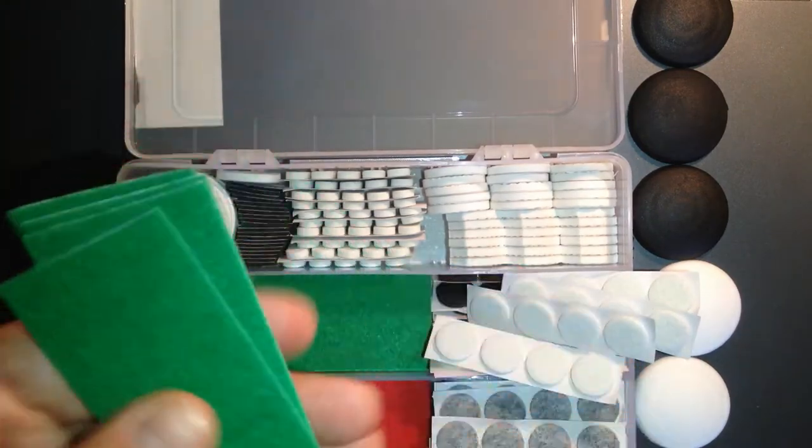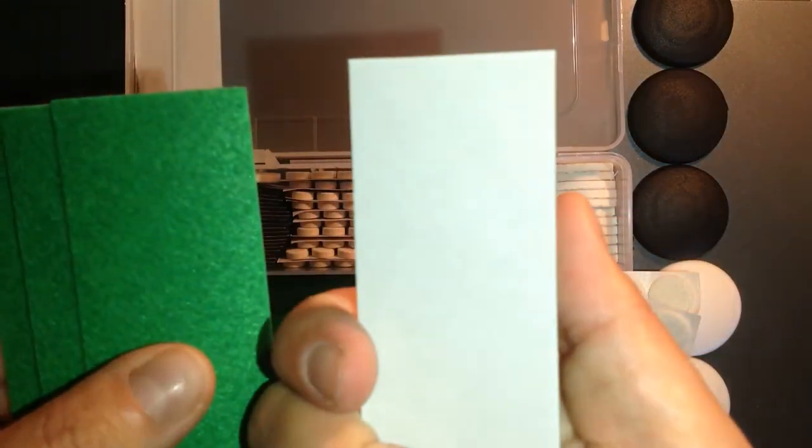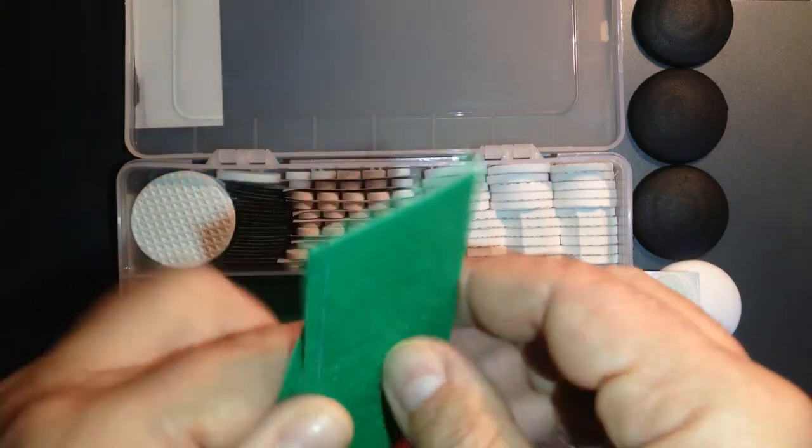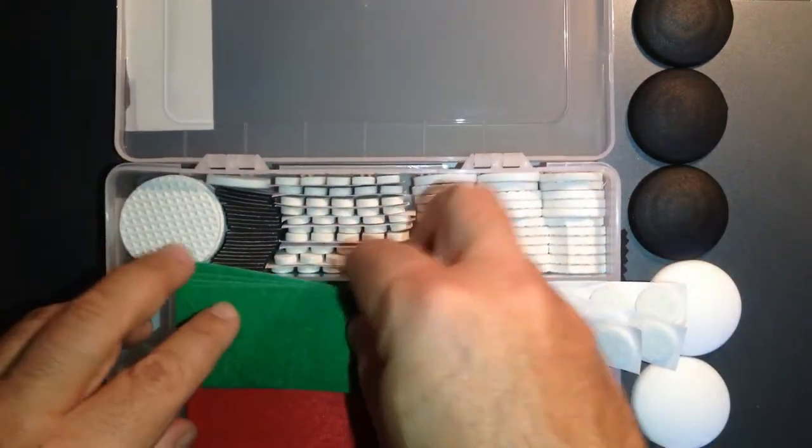E questo è velcro. Qui addirittura abbiamo un delirio di questi da tagliare liberamente. Guardate, meraviglia, hanno tutta la parte adesiva. Quindi, perfetti per i mobili, oggetti, tutto quello che volete.